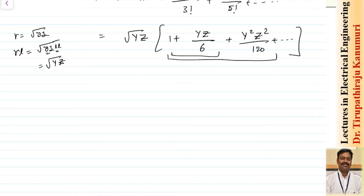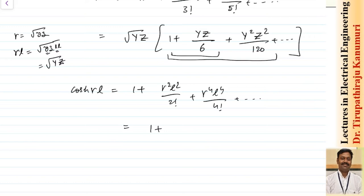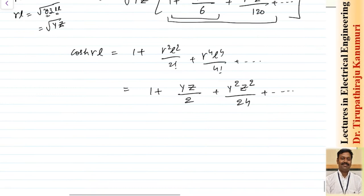For cosh(γl), the Maclaurin series expansion gives: 1 + (γl)²/2! + (γl)⁴/4! + ... which simplifies to 1 + YZ/2 + Y²Z²/24 + ... Again, two or three terms are more than sufficient for accurate results.